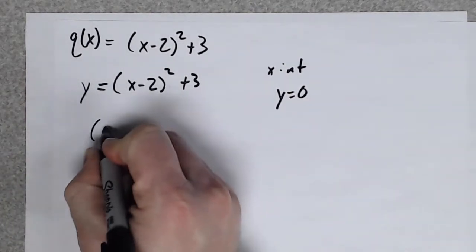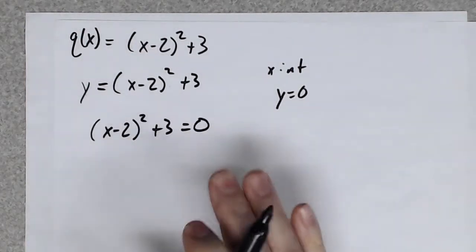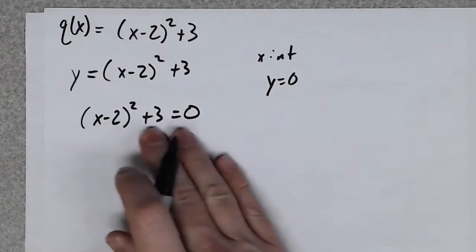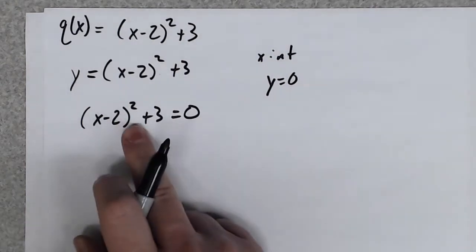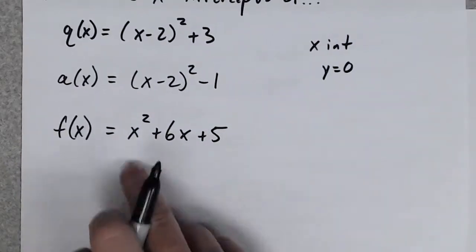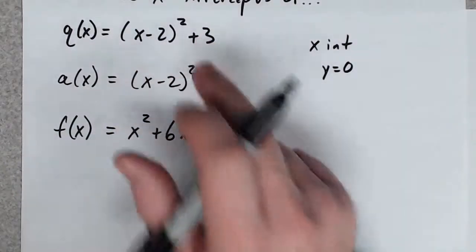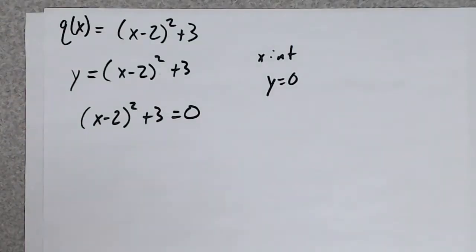I'm going to rewrite it like this: (x minus 2) squared plus 3 equals zero. For every one of these, to find the x-intercept you set the whole function equal to zero — you replace q(x) with zero, however you want to think about it. Now there is a difference between solving one of these and solving standard form.